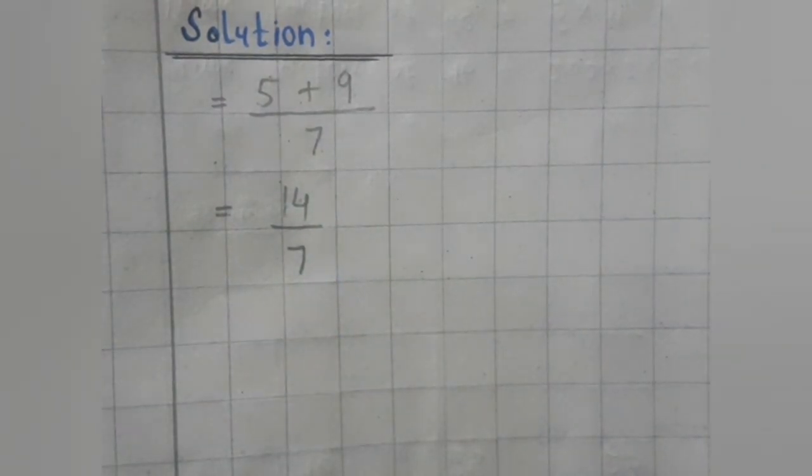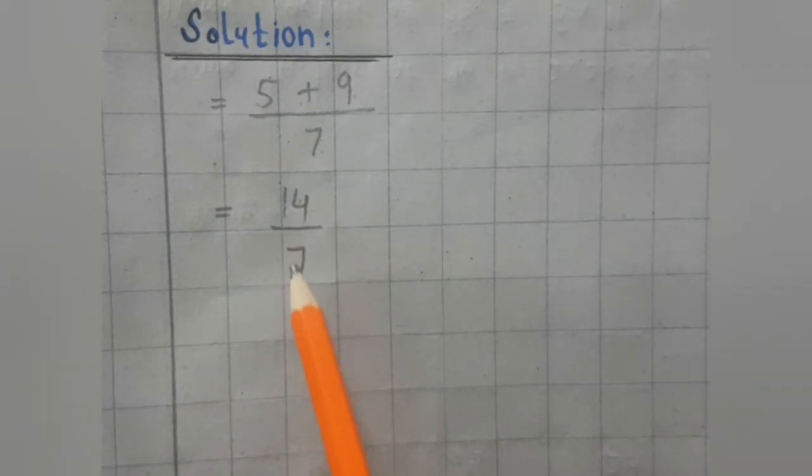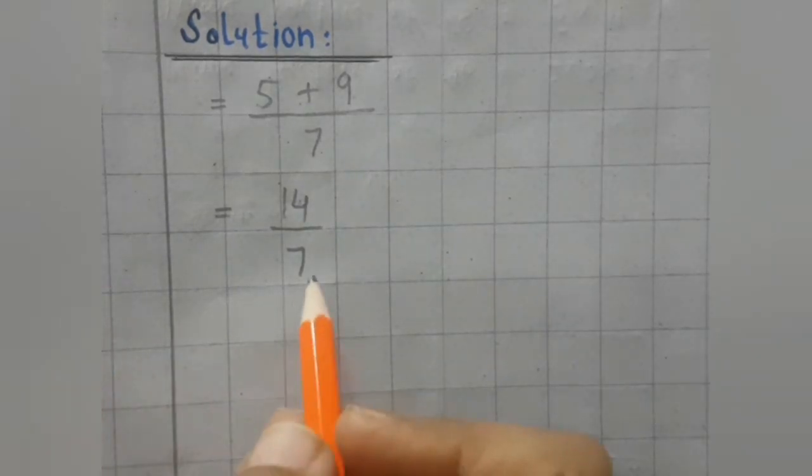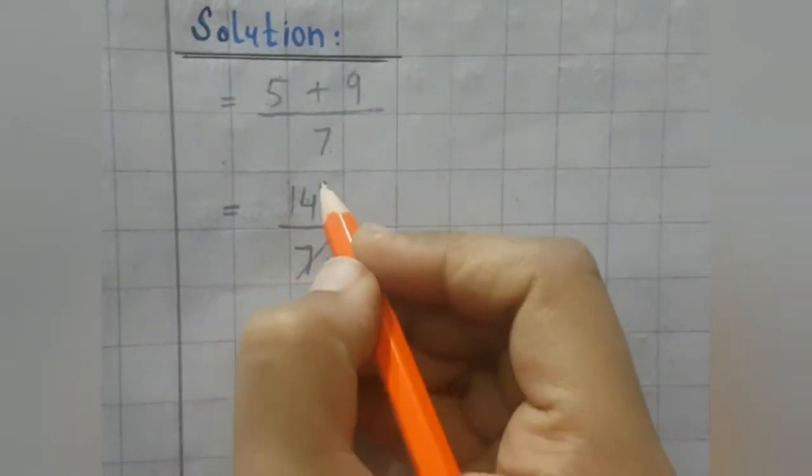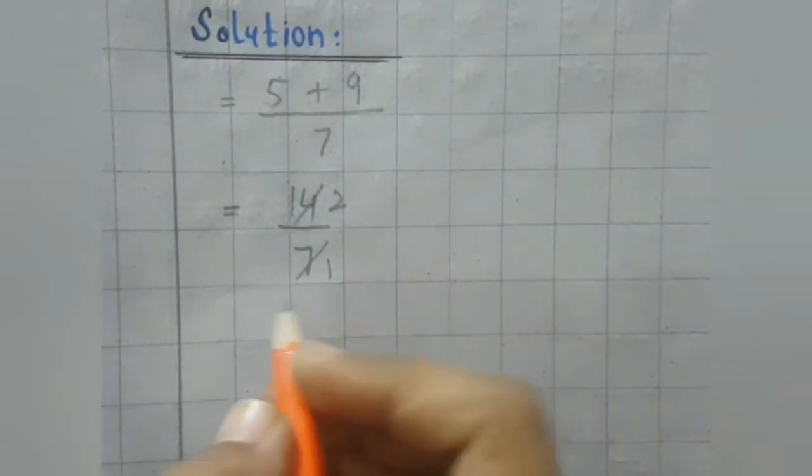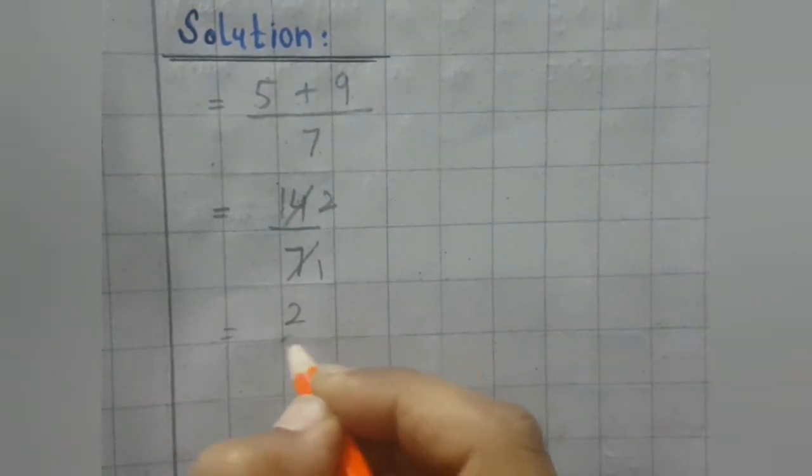Okay, now we will see that can we write this fraction in the simplest form by dividing the numerator and denominator with the same number? Yes, we can divide it with the number 7. 7 ones are 7. 7 twos are 14. Now we have the answer 2 upon 1.